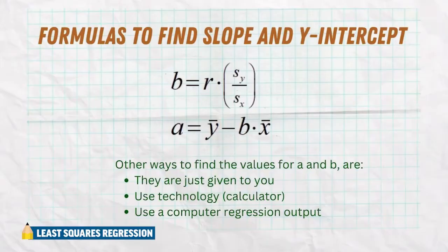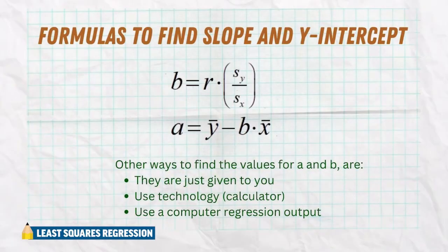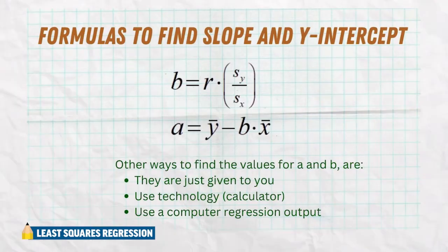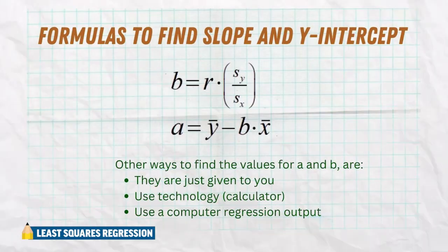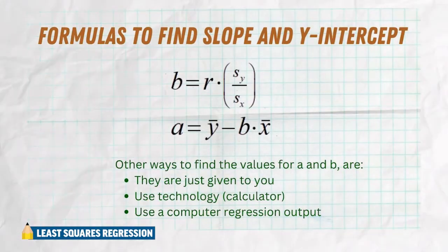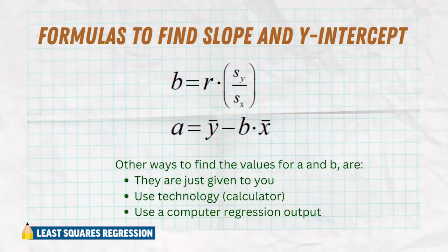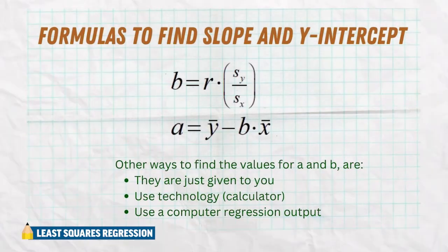We also need the correlation between the x's and the y's. To find the y-intercept and the slope, we have the following formulas. To find the slope, we take the correlation r times the standard deviation of y divided by the standard deviation of x. To find the y-intercept, we take the average y minus the slope times the average x. These formulas are also given to you on the formula sheet for the AP stats exam.